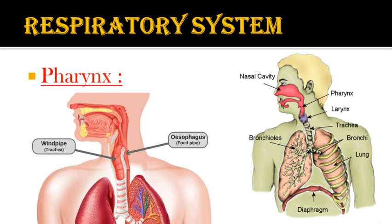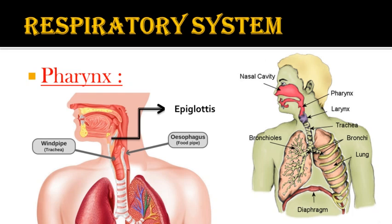There is a lid at the beginning of the wind pipe. You can see the white-colored structure — that is the lid. This lid closes the wind pipe during the passing of food, and it is known as the epiglottis. The epiglottis normally prevents the entry of food particles into the wind pipe. When food is not passing, the wind pipe remains open and air passes through the pharynx into the wind pipe.